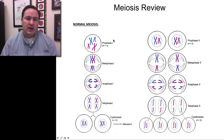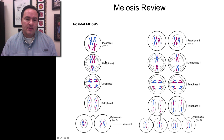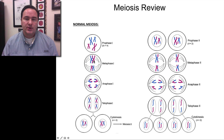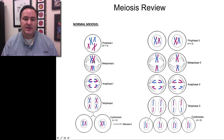And in normal meiosis, during that metaphase I going into anaphase, or when you have those crossing over events, you get chromosomes that start to swap tips.